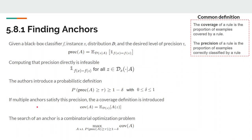If multiple anchors satisfy this precision, the coverage definition is introduced, which is defined as the expectation of the number of samples in D when the rule A applies. Finally, the search of an anchor is a combinatorial optimization problem in which the maximum coverage of A is found subject to the probability that the precision being greater than tau is greater than one minus delta.